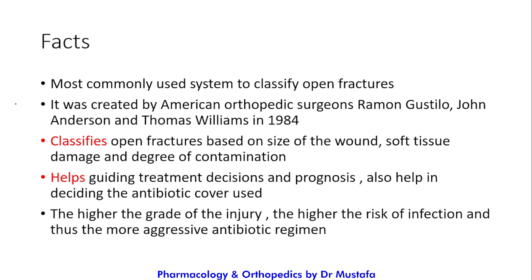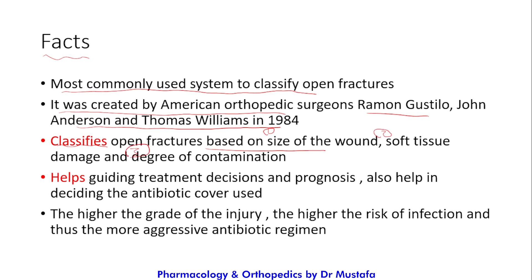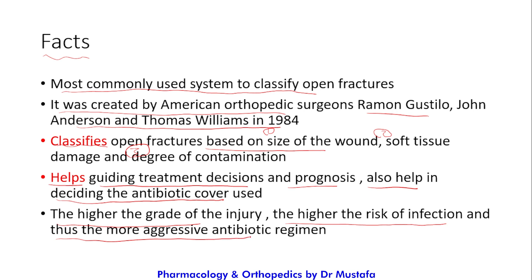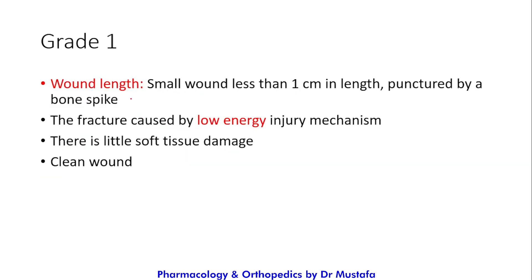The Gustilo-Anderson classification is the most commonly used system to classify open fractures. It was created by American orthopedic surgeons Gustilo, Anderson, and Thomas Williams in 1984. It classifies open fractures based on the size of the wound, the soft tissue damage, and the degree of contamination. It helps guide treatment decisions and prognosis, and also helps decide the antibiotic cover. The higher the grade, the higher the risk of infection and thus the more aggressive antibiotic regimen used.